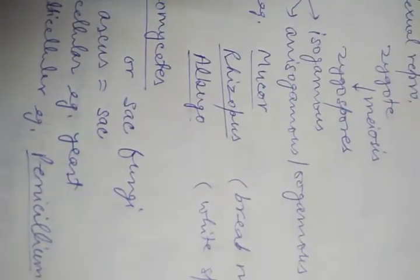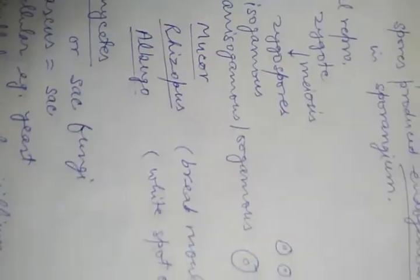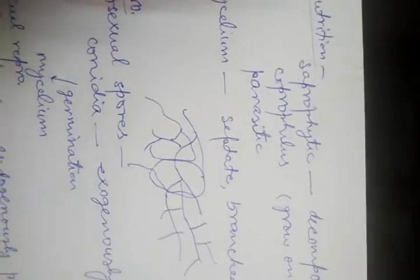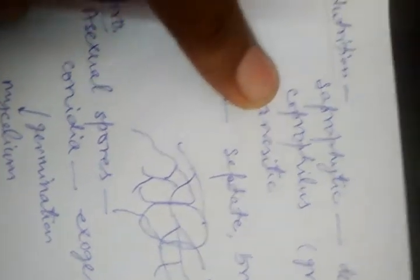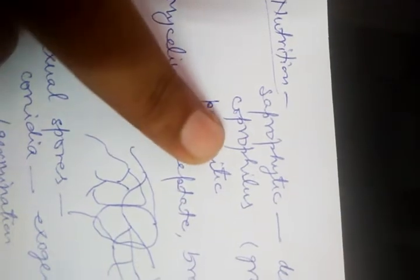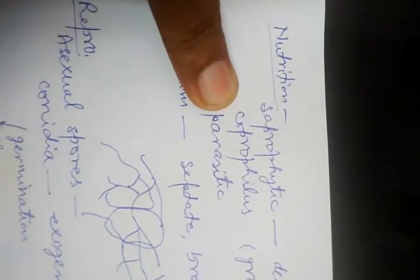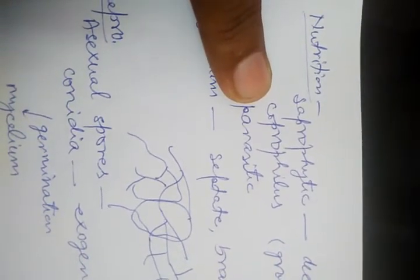Regarding nutrition: like all fungi, many Ascomycetes members are saprophytic — decomposers that feed on dead and decaying matter of plants or animals. Many fungi also grow on excreta or dung of cattle — they are called coprophilous. 'Copro' refers to excreta or dung, and 'philous' means liking, so those that grow on dung are coprophilous.